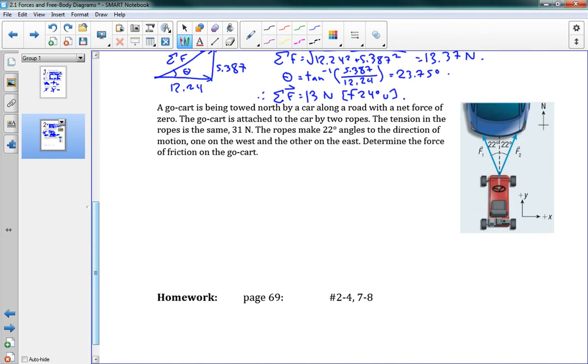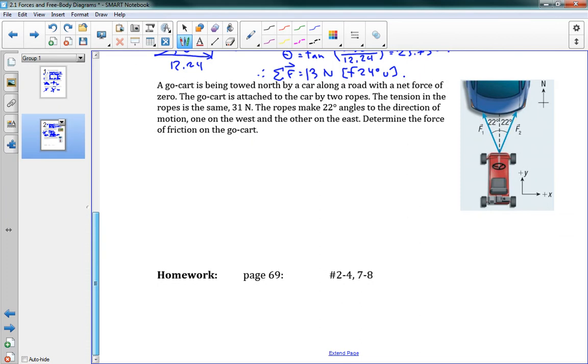It says that a go-kart is being towed north by a car along a road with a net force of zero. The go-kart is attached to the car by two ropes. The tension in the ropes is the same, 31 newtons. The ropes make 22 degree angles to the direction of motion, one on the west and one on the east. Determine the force of friction on the go-kart. So if I was to draw a free body diagram of my go-kart. Well, I've got F1. I've got F2. I've got the force of kinetic friction, Fk. And I'm told here that the net force is equal to zero. That's what the problem tells me. It tells me that it experiences zero net force. So then, that gives me some information.